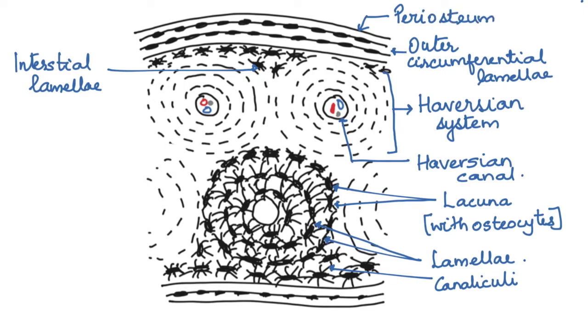The inner part of the bone towards the marrow cavity also has an inner circumferential lamellae and this is bound by a membrane that is called as the endosteum. The endosteum is the membrane that is towards the marrow cavity in the bone.